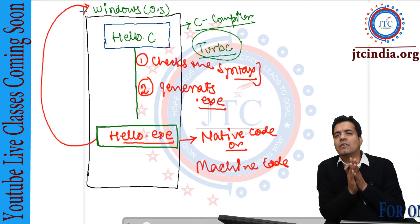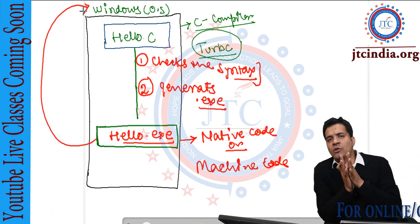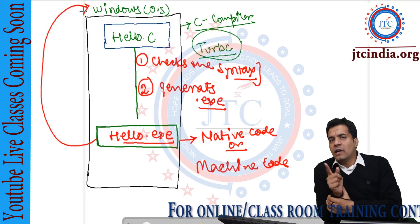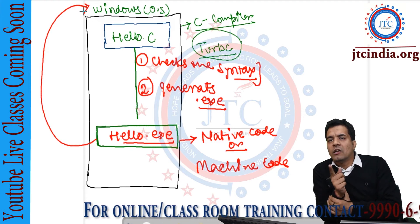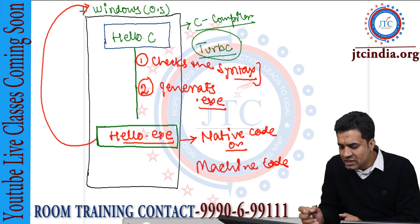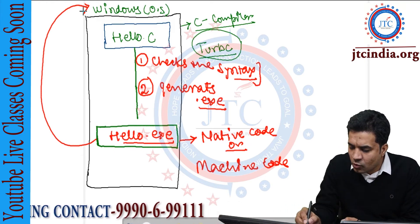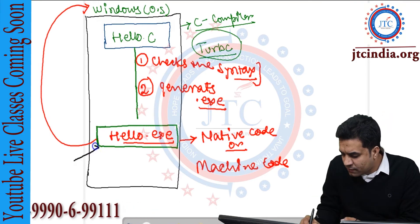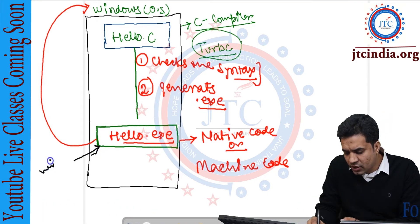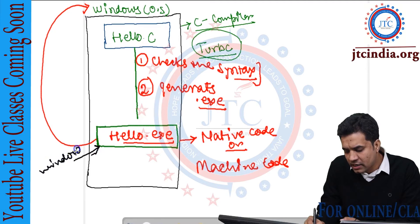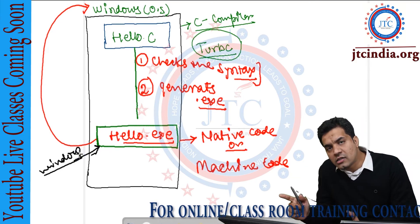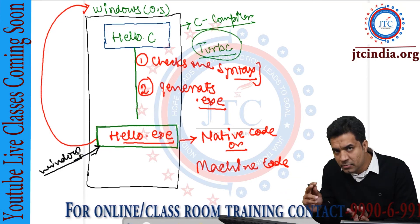Now, when I say it is machine code, it is obvious that for different machines there could be different machine code. This means that the exe file we have is different for the Windows operating system and will be different for some other operating system.